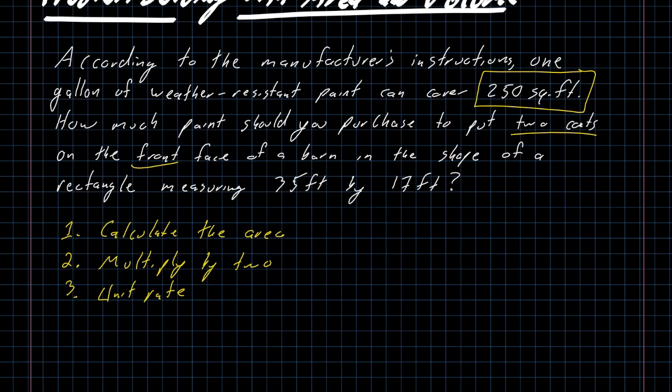One gallon, or every 250 square feet. When we know the number of square feet, we can use that unit rate as a unit conversion in order to figure out the number of gallons. Three-step process for solving this problem. Each of the steps is relatively straightforward, but that's a lot.